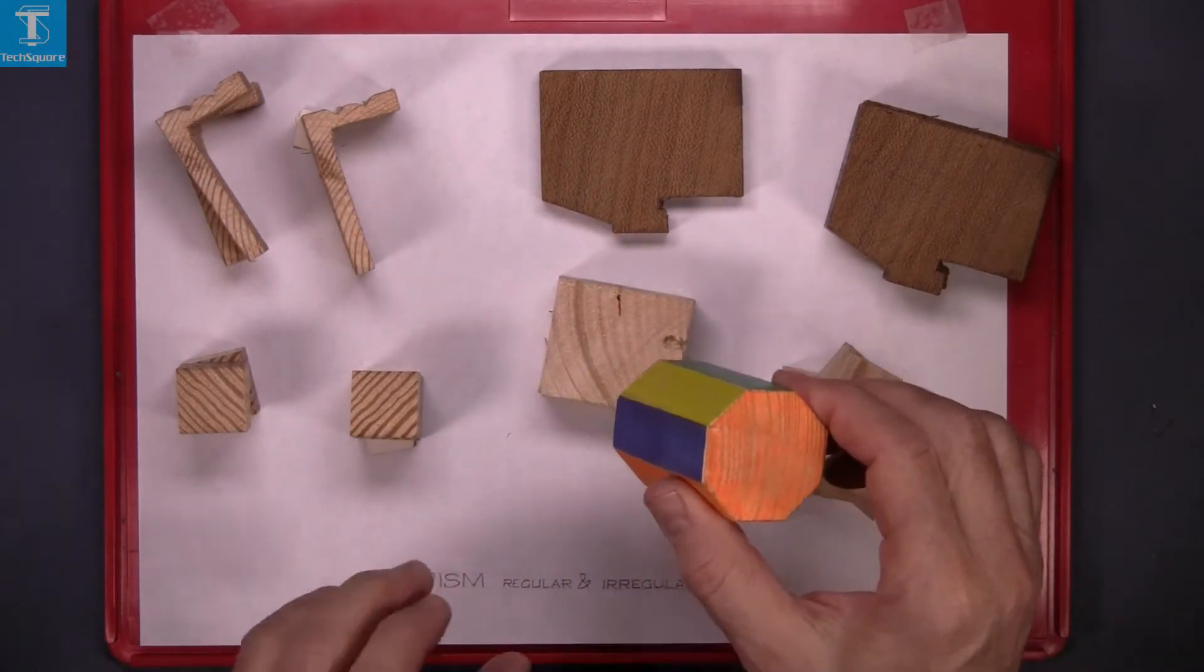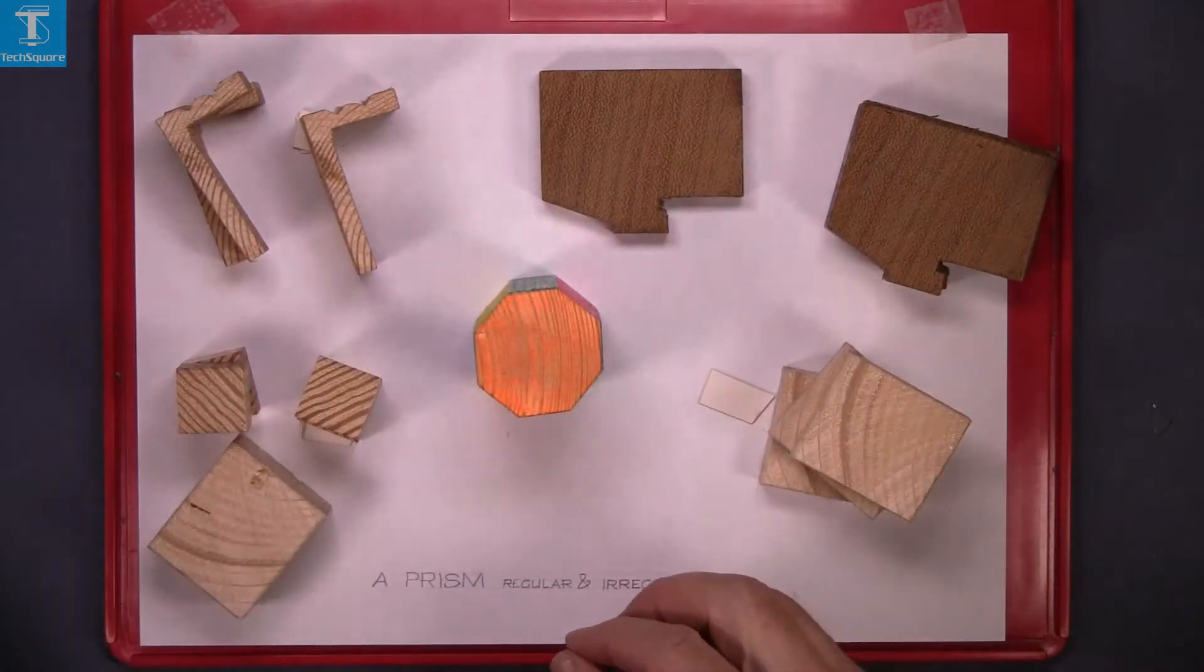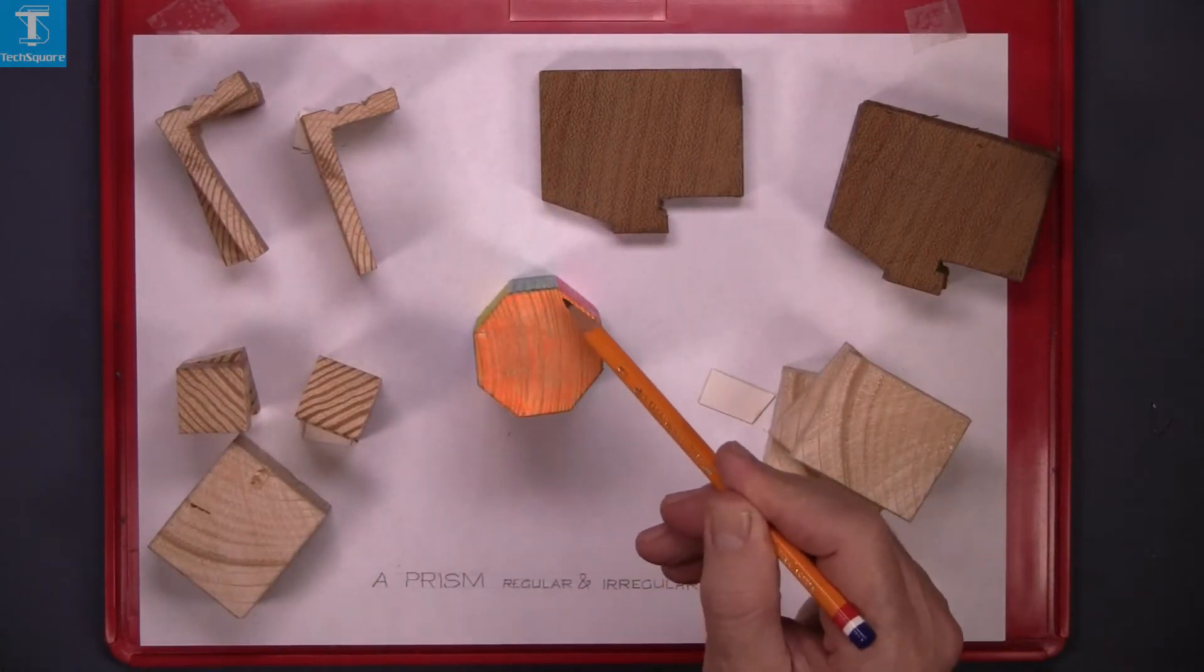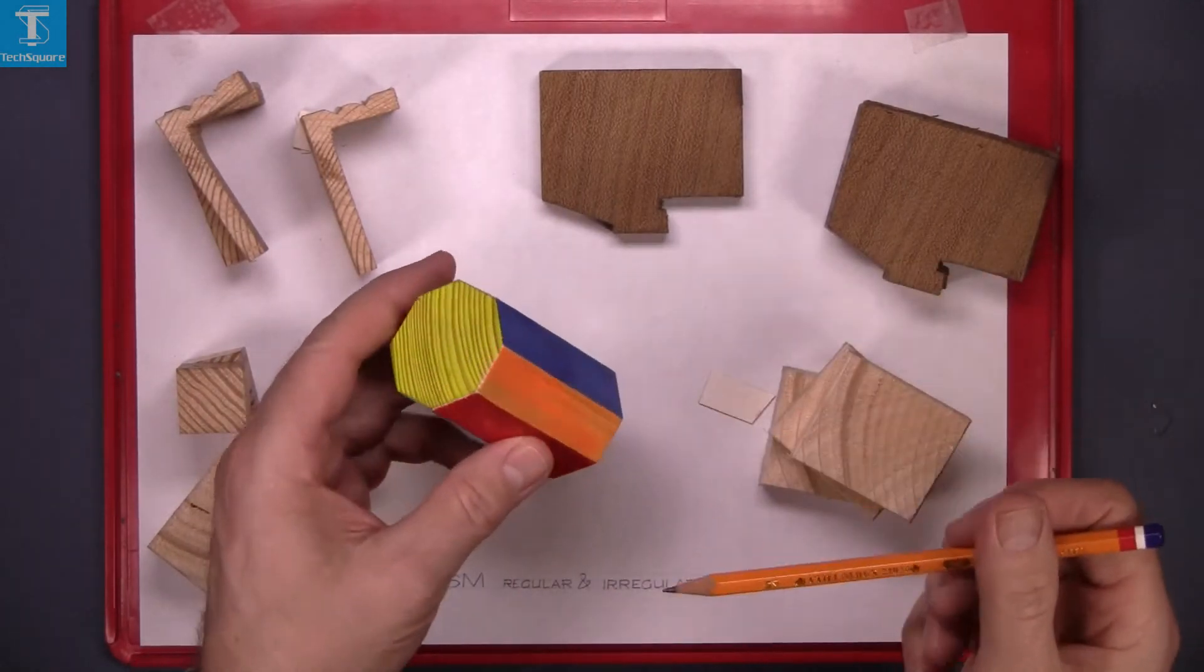Here we have a regular prism. This is an octagon. And its base is the same shape. It's a prism.